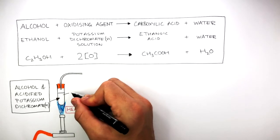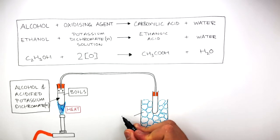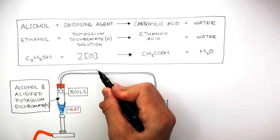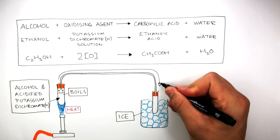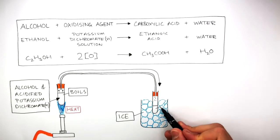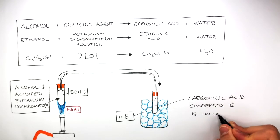The delivery tube is connected to another test tube, which is in a container of ice. When the reacting mixture is heated and boiled, the ethanoic acid evaporates and flows into the test tube, where the ice causes the carboxylic acid to condense and be collected.